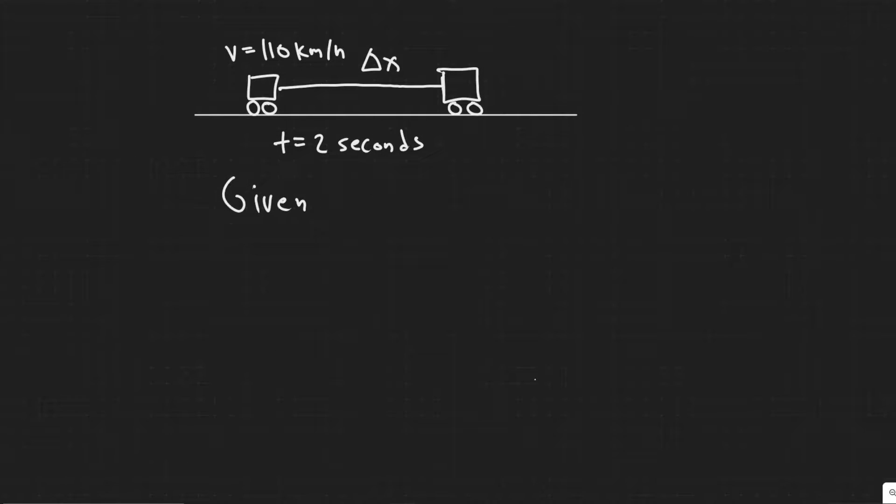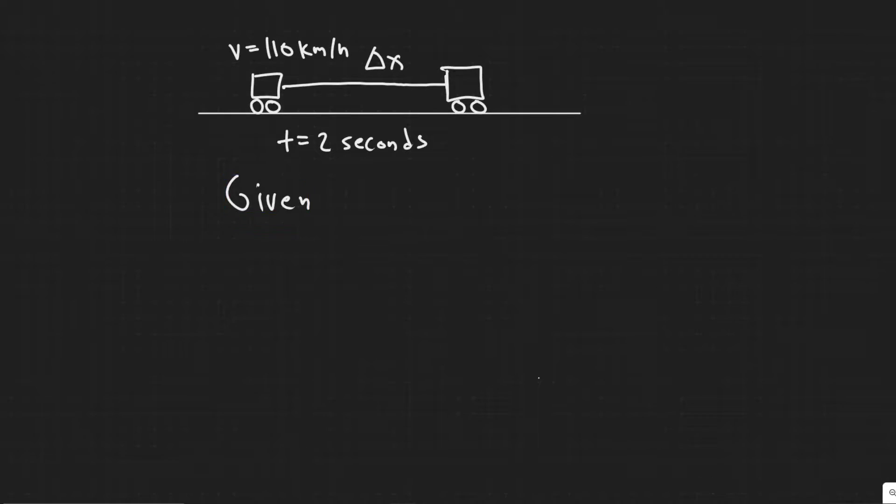And then in kinematics, you're going to be solving these equations. And there's four main equations. You can look them up. Just type in kinematic equations and you'll see them. And basically what we do is we plug in variables into those equations to solve for other variables. So there's five main kinematic variables, which I'll write them here.